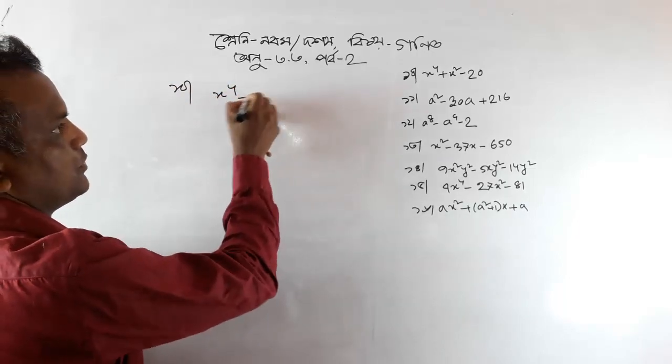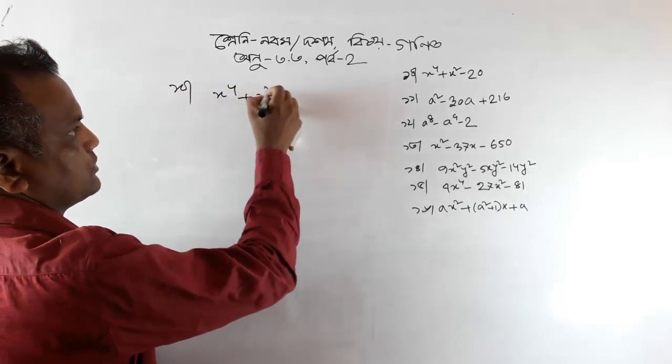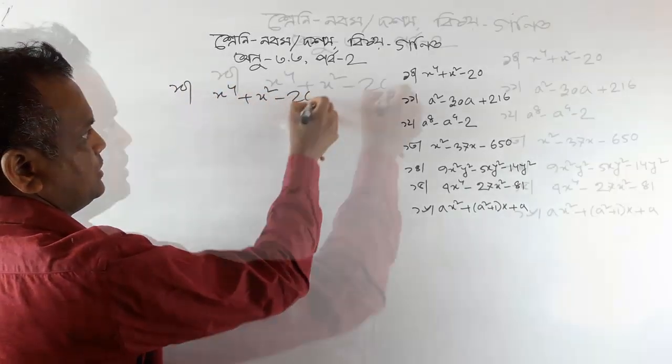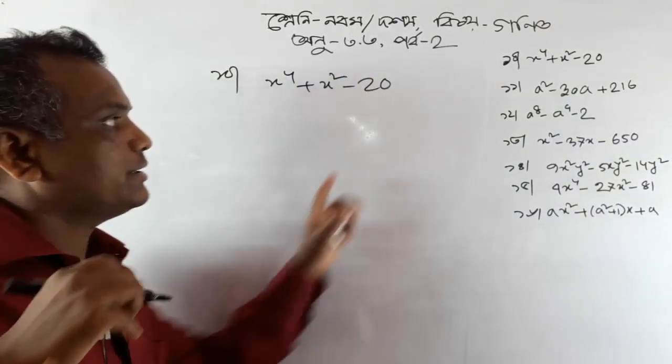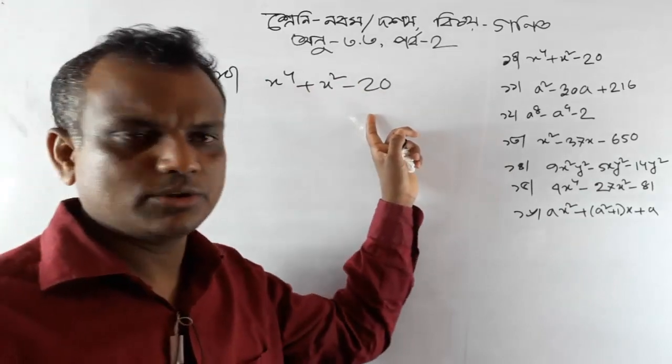x to the power of 4 plus x squared minus 20. We have a middle term factor.